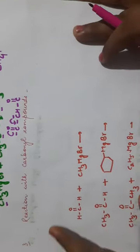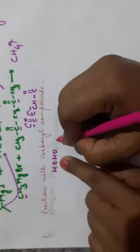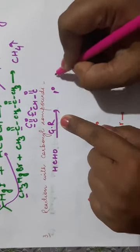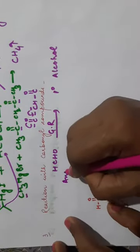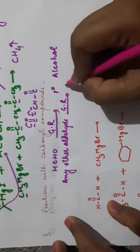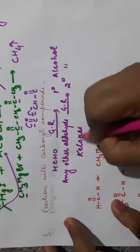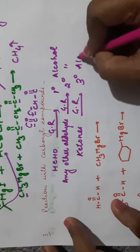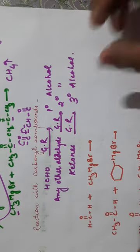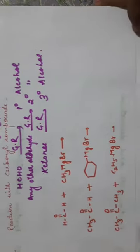Third reaction: Grignard reagent with carbonyl compounds. If the reaction is carried out with formaldehyde, a primary (1°) alcohol is formed. If any other aldehyde (other than formaldehyde) is used, a secondary (2°) alcohol is obtained. If you react with a ketone, a tertiary (3°) alcohol is obtained. So: formaldehyde → 1° alcohol, other aldehydes → 2° alcohol, ketones → 3° alcohol.